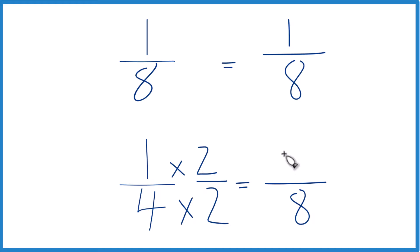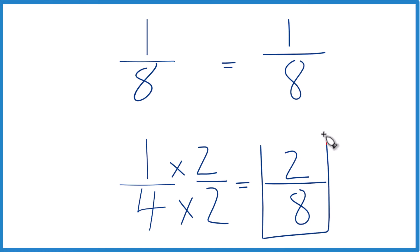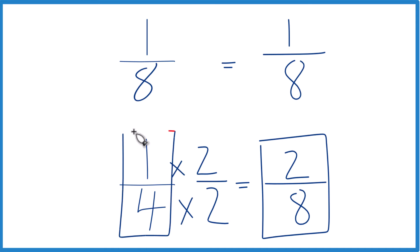1 times 2 gives 2/8. And 2/8 and 1/4 are equivalent fractions. Now I have the same denominator, so I just compare the numerators. 2 is greater than 1, so 2/8 is greater than 1/8. Since 2/8 and 1/4 are the same, 1/4 is greater than 1/8. That's how you do it.